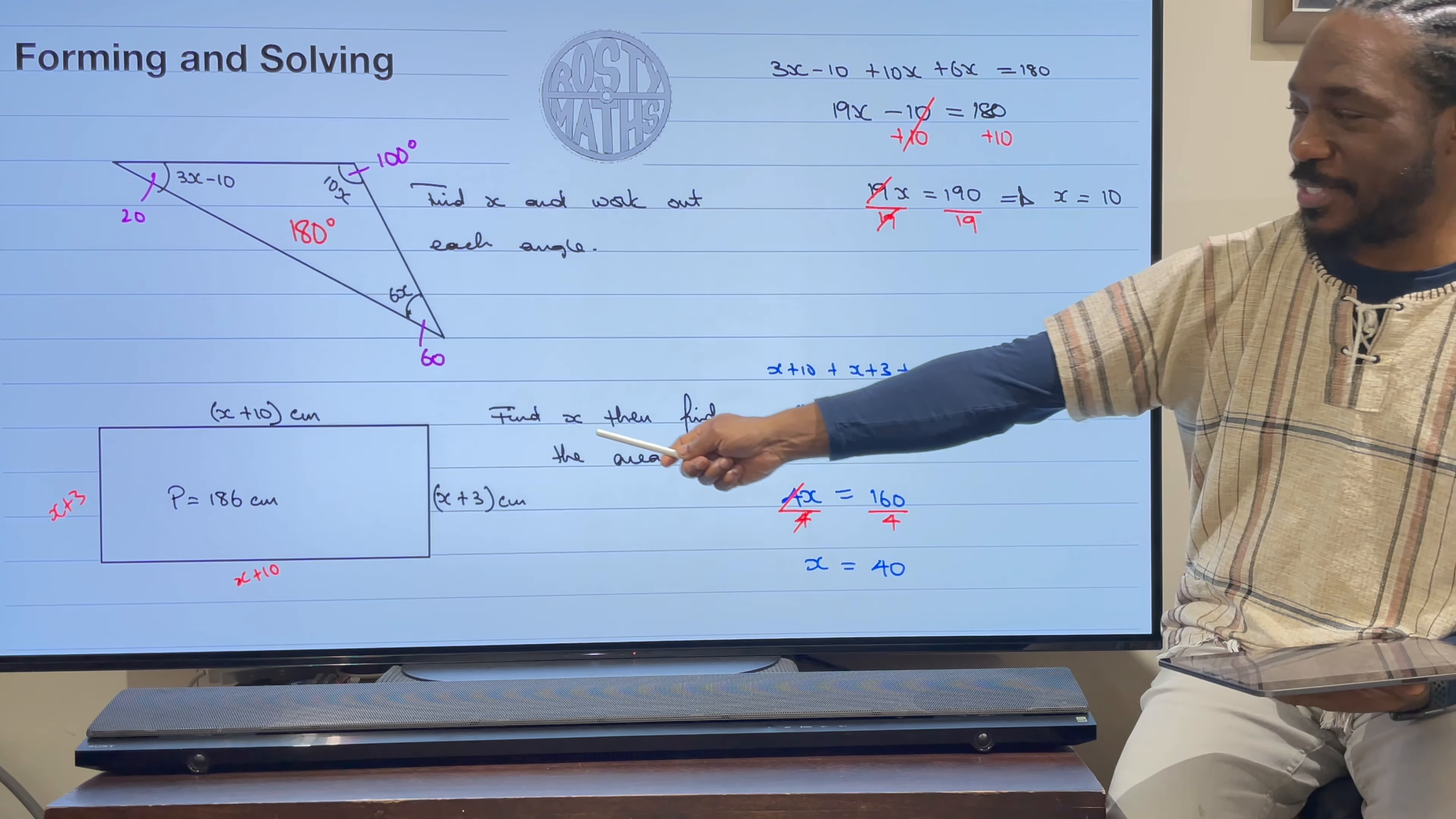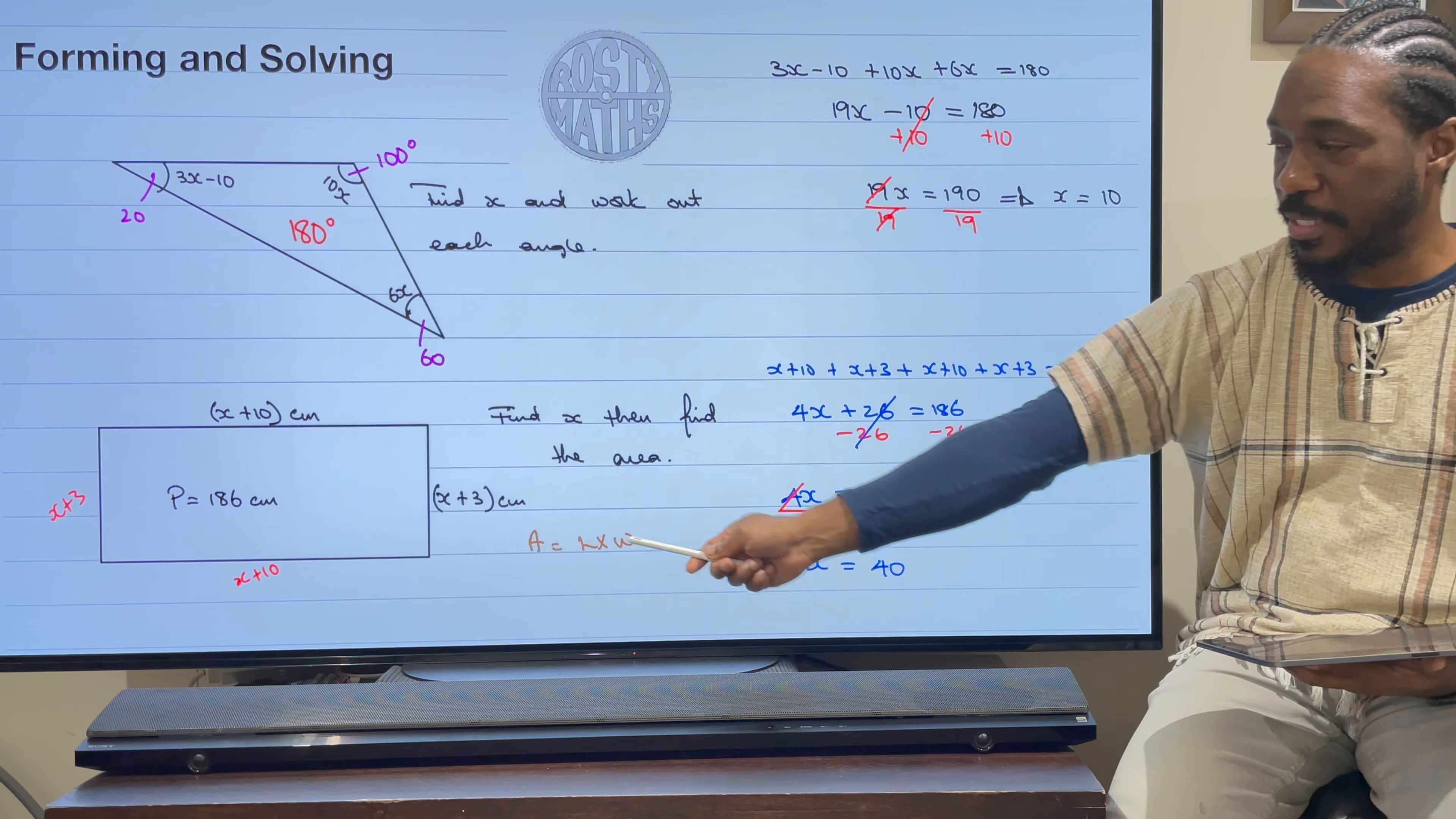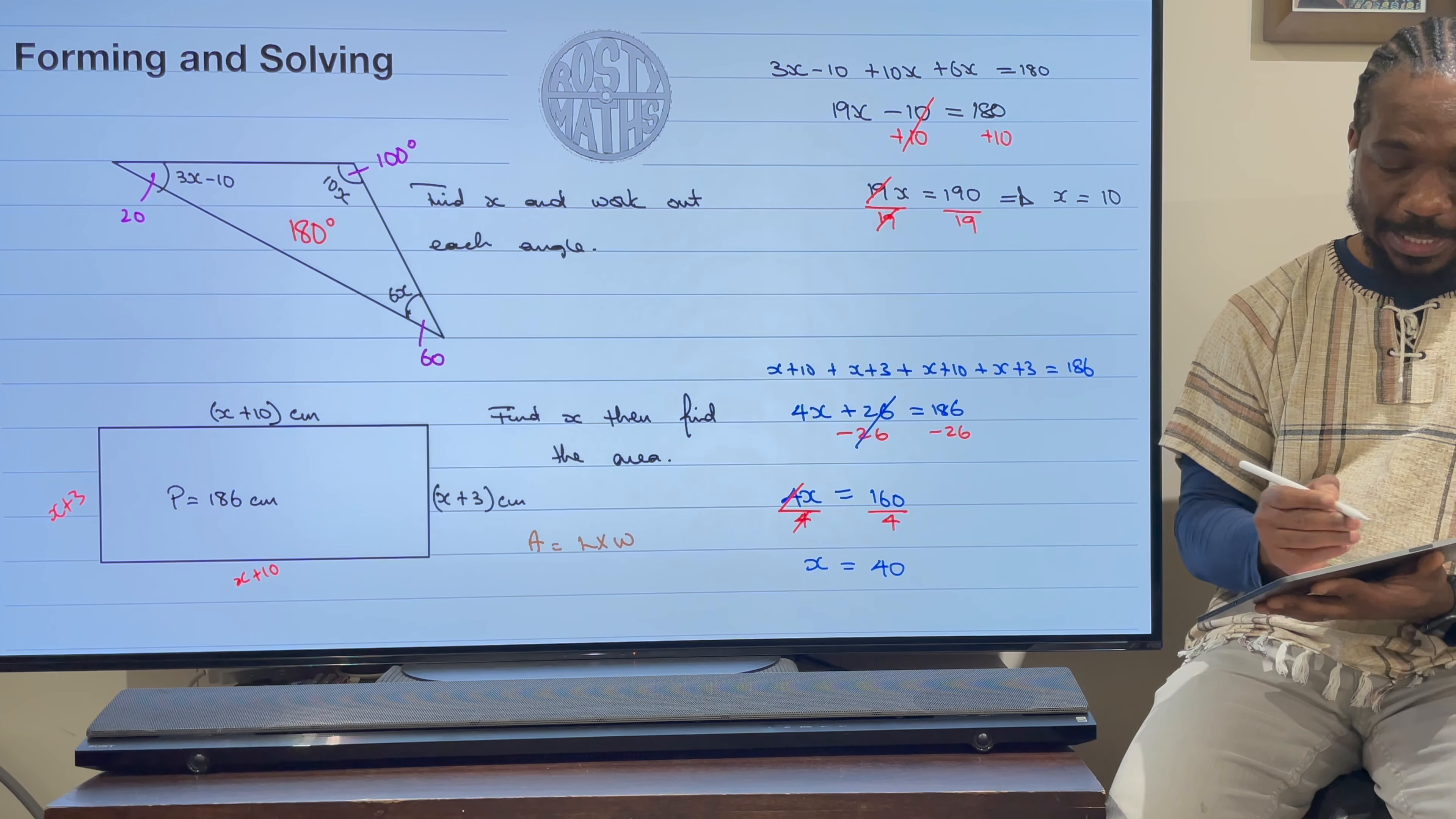Now I've got x is 40, I now need to work out the area because I've got x, I know it's 40. Now I need to work out the area. In order to work out the area, it's a rectangle, so to find the area of a rectangle I need to do area equals length times width. Now I know that the length here is x add 10, but x is 40, so this is 40 add 10, so the length is 50.